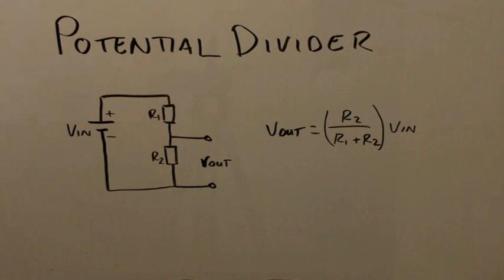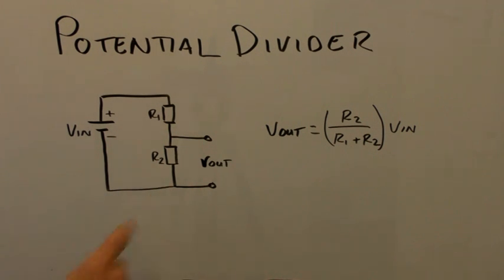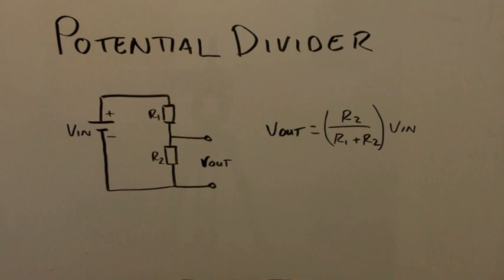The topic of today's video is the potential divider. Many reference books state that for a potential divider circuit, as shown here, the formula for the output voltage is Vout equals R2 over R1 plus R2, times the voltage in. We're going to look at how we derive this equation from the circuit.